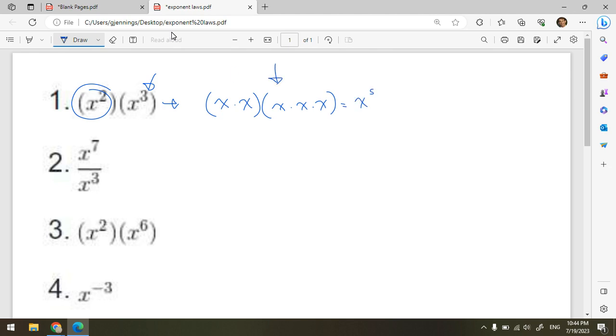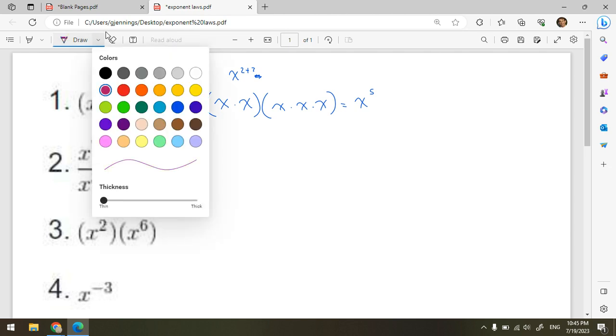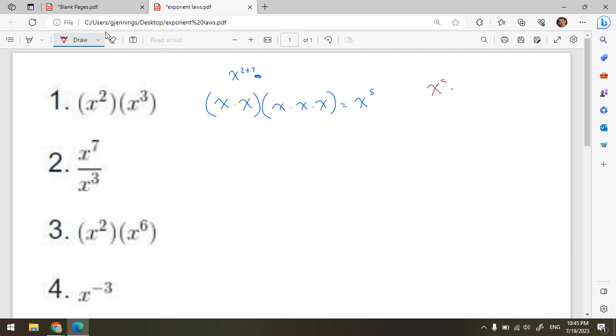But we don't want to have to write things out in expanded form every time. That would be very time consuming. So really, what we can do is just do x to the 2 plus 3. In these cases, you add the exponents when multiplying powers of the same base. So our algebraic rule, x to the a multiplied by x to the b. That's a copies of x multiplying, b copies of x. So that's going to equal x to the a plus b. A plus b copies of x multiplying. That's our exponent.